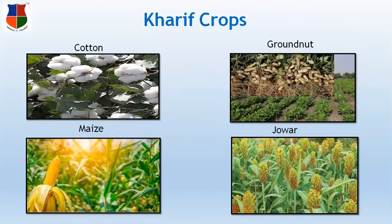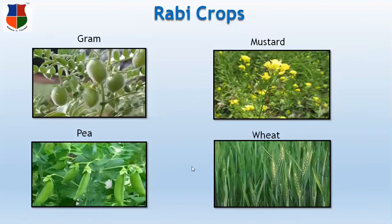Let's see the different examples of Kharif crops and Rabi crops. You can see the pictures. These are the examples of Kharif crops: cotton, groundnut, maize and soybean. Now let's see the Rabi crops: wheat, mustard, peas and barley. These are well-known crops used by all.